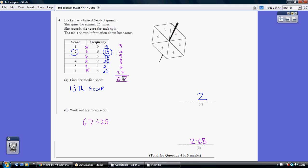These are various bunches of scores. If we add all of this total up, we get 67. That's the total we scored with our 25 spins. So our mean score is 67 divided by 25, which is 2.68.